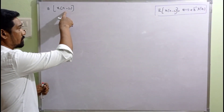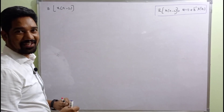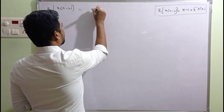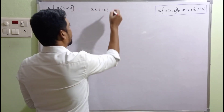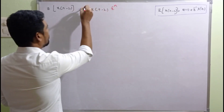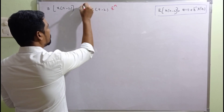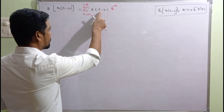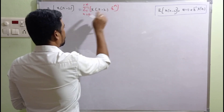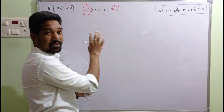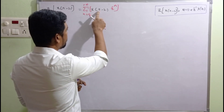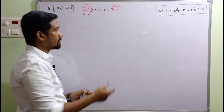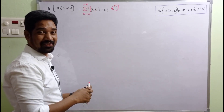Now let's find the Z-transform of X(n-2). Again, X(n-2) is multiplied with Z raised to minus n and the summation runs from n=0 to positive infinity for the unilateral Z-transform. Expanding: plugging in n=0, n=1, n=2, and so on.